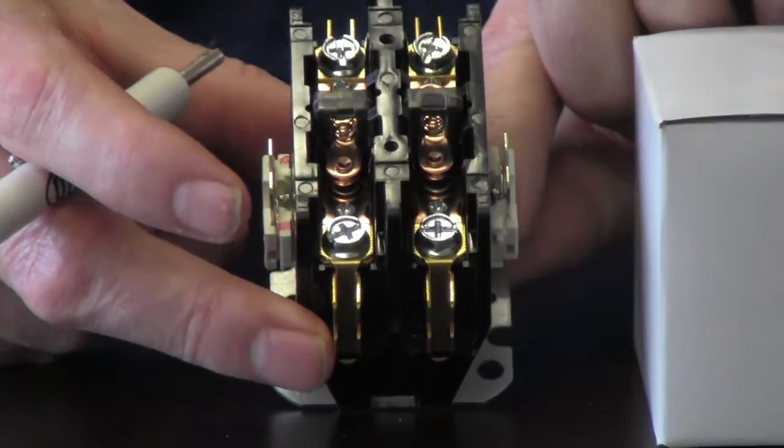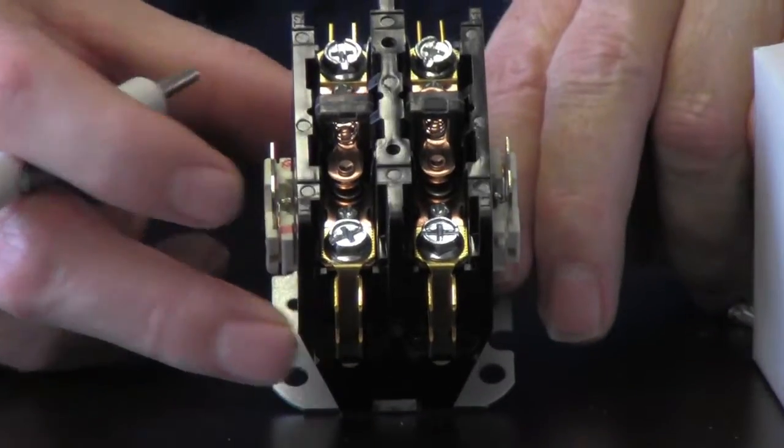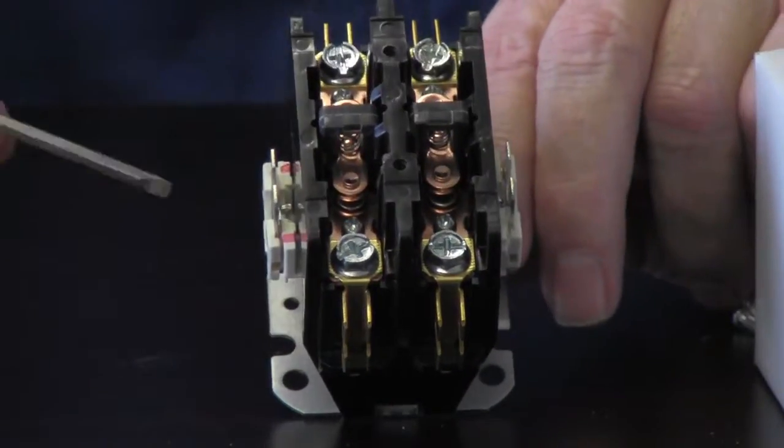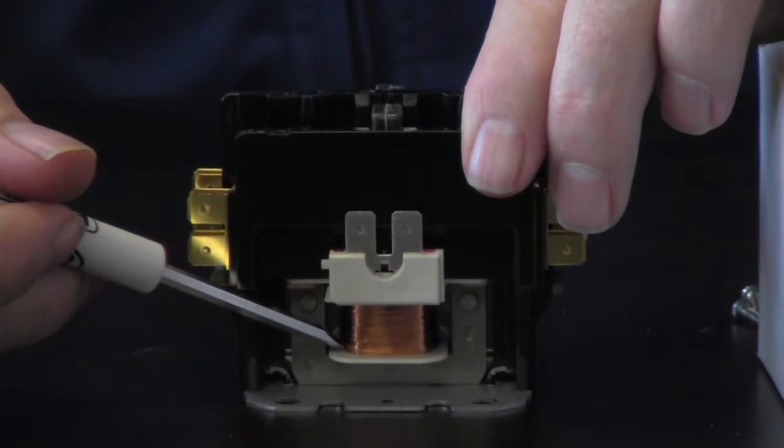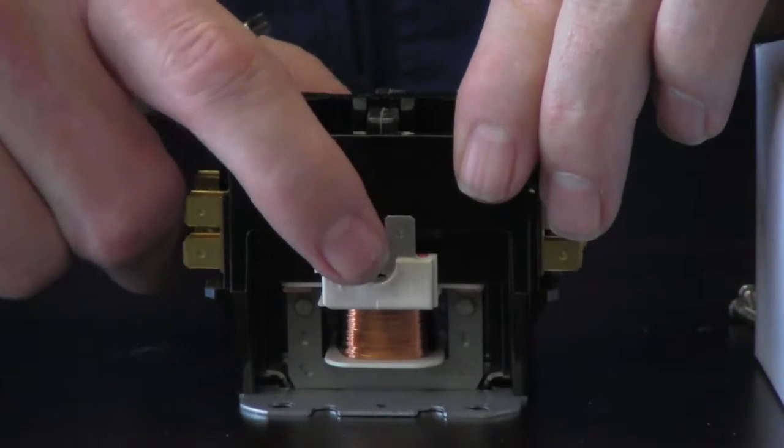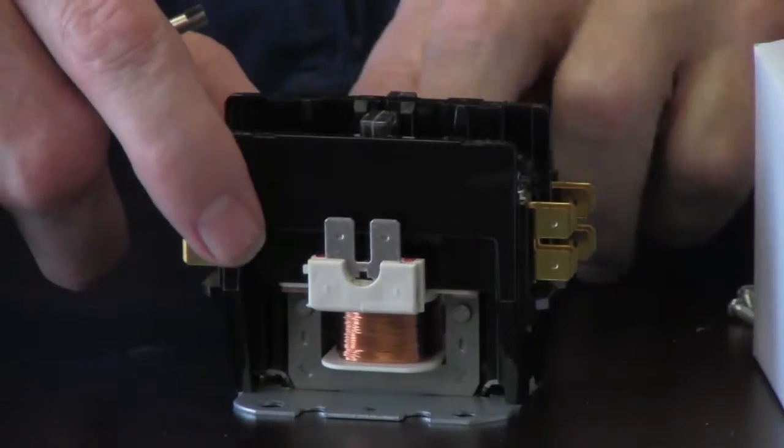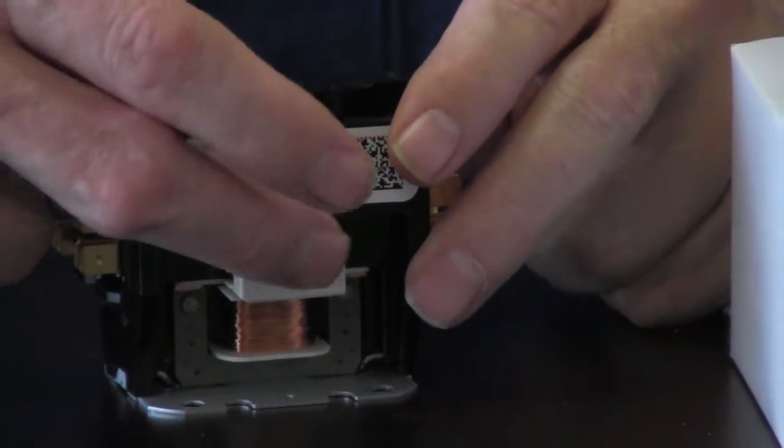The way it's going to close is when you make a call for cooling on your thermostat, it's going to energize your coil. Your coil is located right here. This is where your 24 volt connections will go. So you got one there and then you got another one on this side.